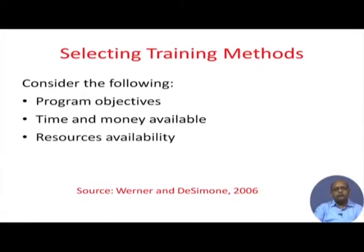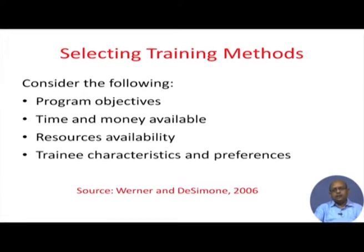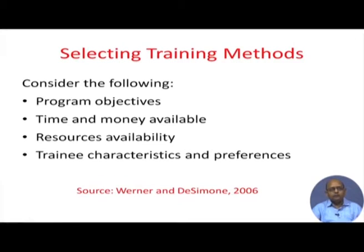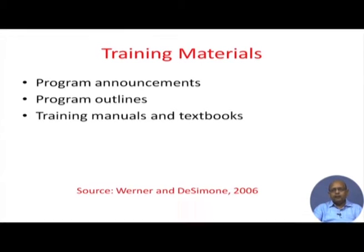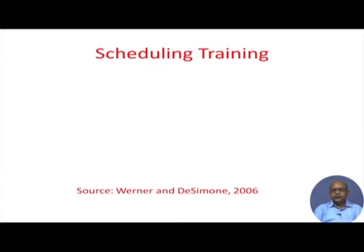When it comes to experiential learning, you need role plays, games, and simulations. Method selection also depends on whether you have the resources in terms of time and money, and what kind of trainees you have — their knowledge and skill base, and what kind of method they prefer. Training materials include program assignments, brochures, outlines, manuals, textbooks, reading materials, consumables, and training aids.